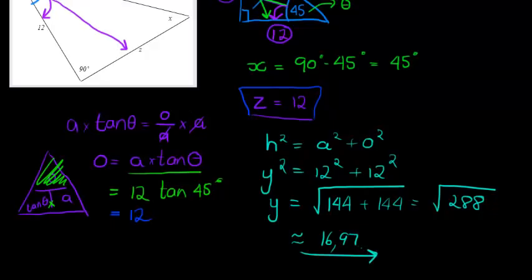So 12 squared and 12 squared is equal to 144 plus 144, which gives me the square root of 288. And that is 288 square root of that 16.97. So that side length is roughly 16.97. And that's it.